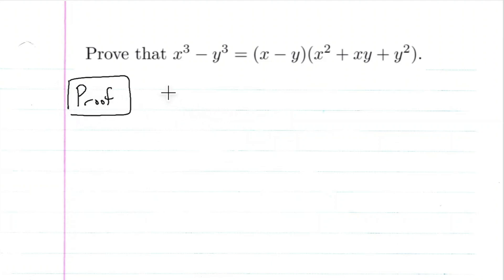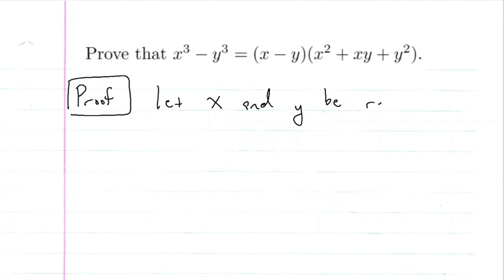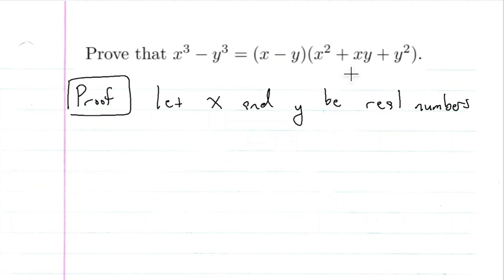Michael Spivak's Calculus chapter one deals with properties of real numbers, so we need to set these up as real numbers. Let x and y be real numbers. And then what we see is this identity: x cubed minus y cubed is equal to x minus y times x squared plus xy plus y squared.